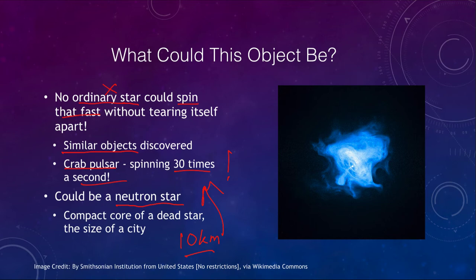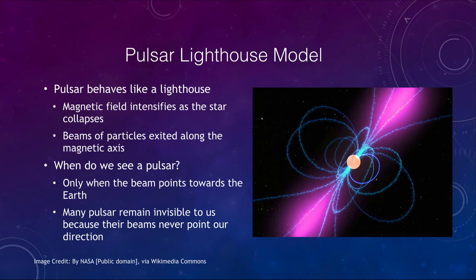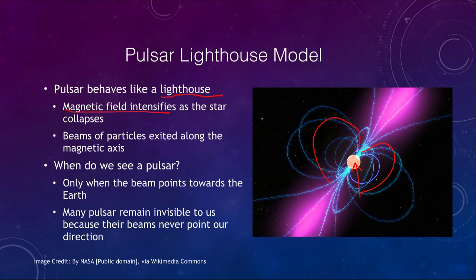Why do we detect pulses from only some of these neutron stars? We use what we call the lighthouse model, in which the pulsar behaves like a lighthouse beaming material that we can then see. As the star collapses, the magnetic field intensifies. The bluish lines looping around the pulsar represent the magnetic field lines, and as it collapses, they become much more intense, forcing charged particles to beam out along the two magnetic axes — producing a very tight beam in each direction.